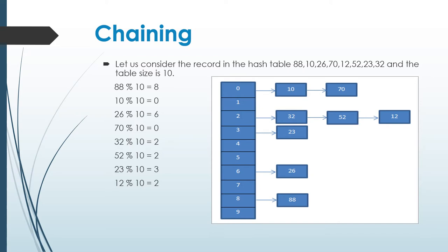70 mod 10 equal to 0. It should be placed at key value 0, but already 10 is placed in the hash table. So by forming a chain, 70 is attached to 10. 32 mod 10 equal to 2, so 32 is placed at key value 2. 52 mod 10 equal to 2. It should be placed at key value 2, but already 32 is placed, so by forming a chain, 52 is attached to 32.